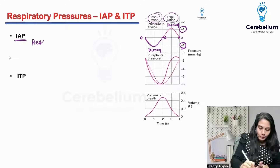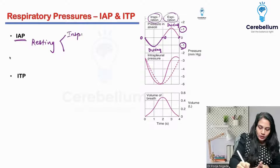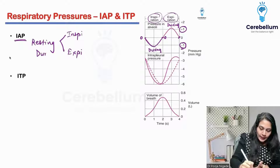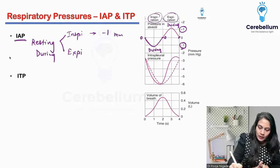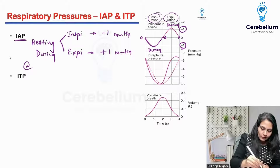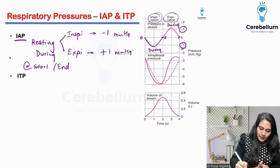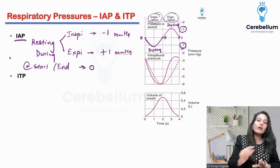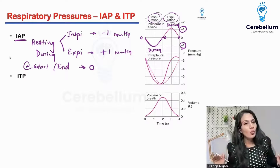During quiet resting respiration, you have two phases: inspiration and expiration. During inspiration it is minus 1 mmHg, and during expiration it is plus 1 mmHg. But at the beginning or end of inspiration or expiration, it is 0.